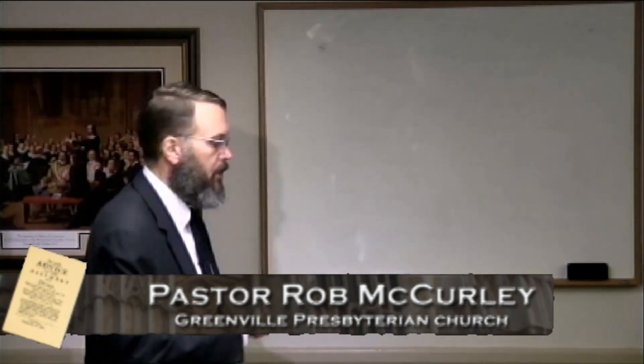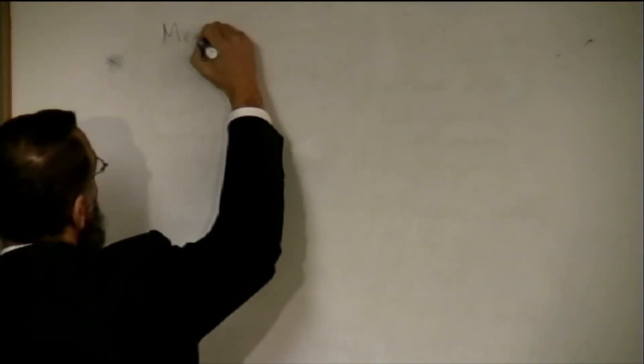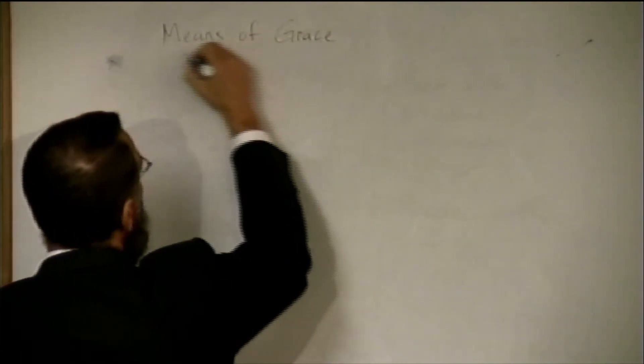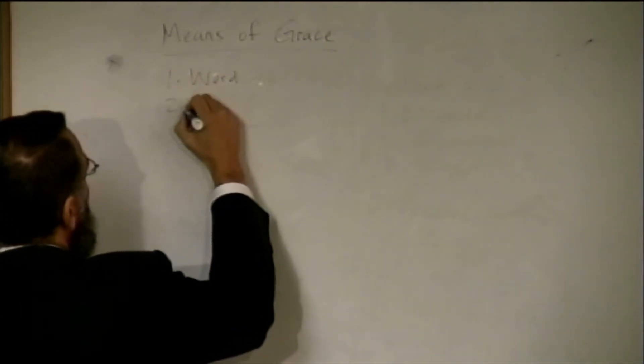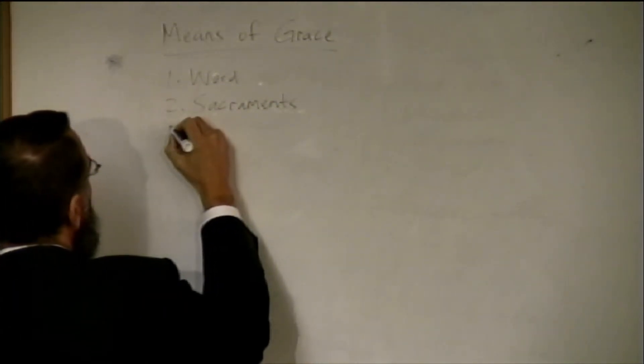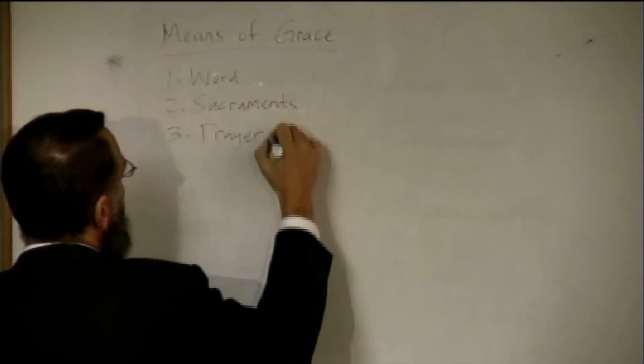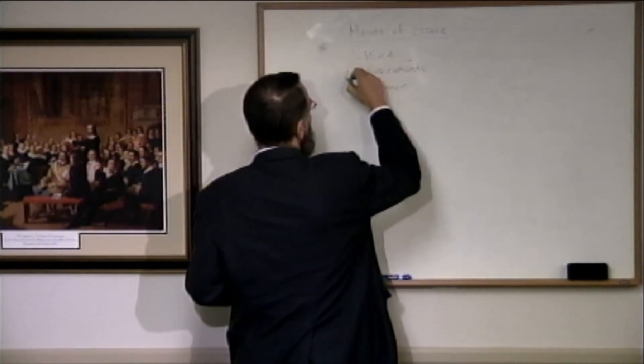Shorter Catechism, Question 91. We now turn from the Word of God to the Sacraments. So again, just to review here, when we think of the means of grace, the outward and ordinary means of grace that God has given to us, there are three. There is the Word, there are the Sacraments, and thirdly, there is prayer.